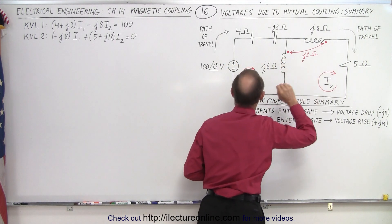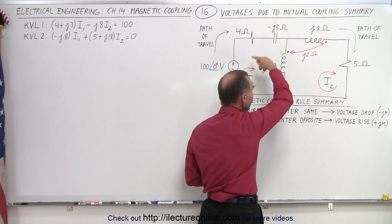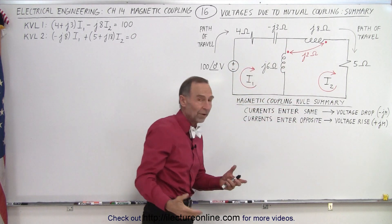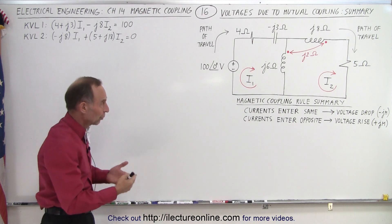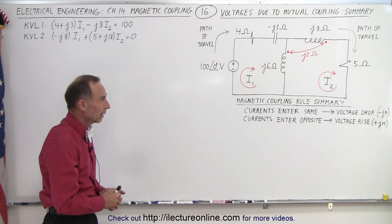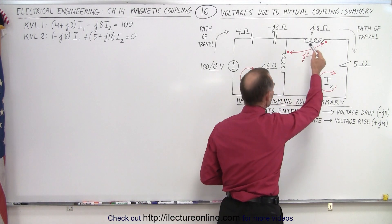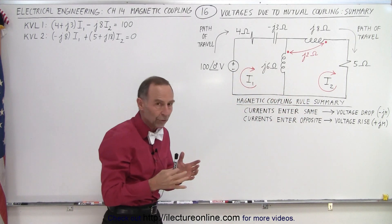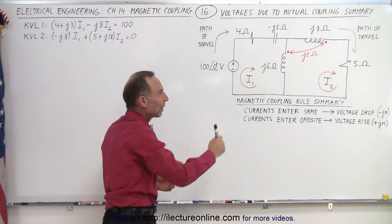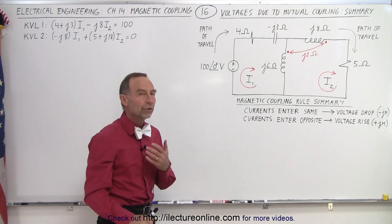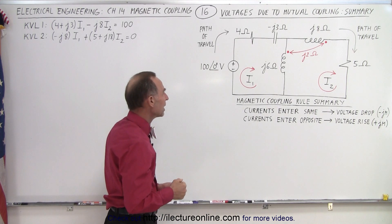So we assume a current direction and then we assume a path of travel. In each case, around each mesh, we're going to travel in a clockwise direction — the same direction as the current inside that mesh. We also have magnetic coupling between these two inductors, and so we're going to go around each loop and simply write down all the voltage rises and all the voltage drops using this particular technique.